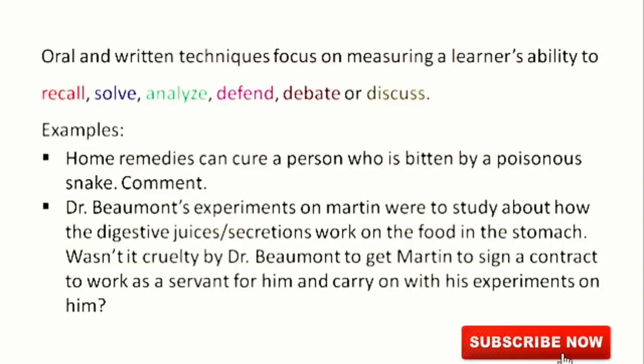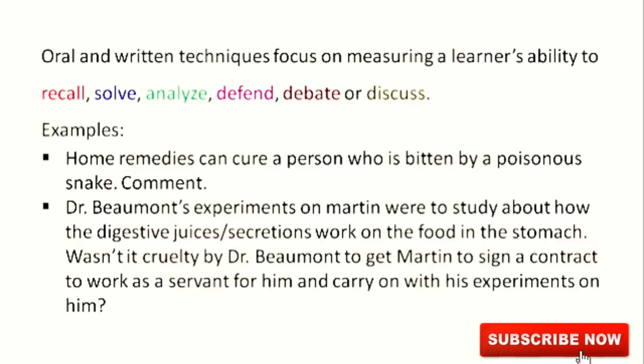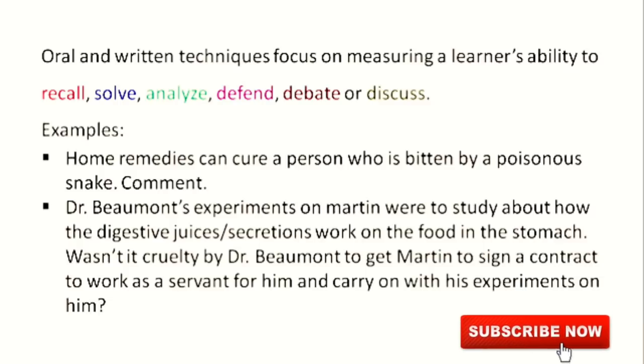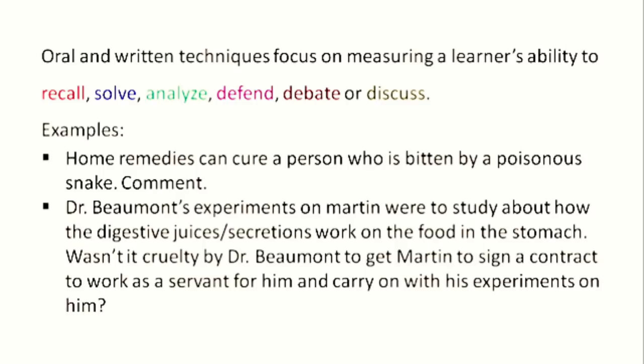The second example involves Dr. Beaumont's experiments, which were conducted on a person named Martin to study how digestive juices or secretions work on food in the stomach. Wasn't it cruelty by Dr. Beaumont to get Martin to sign a contract to work as a servant and carry on with his experiments on him? A learner would analyze this statement, have a mental debate, a self-talk, and then defend their position.